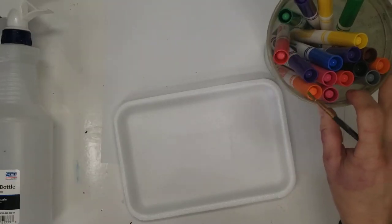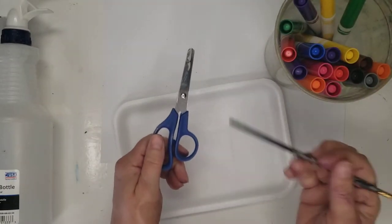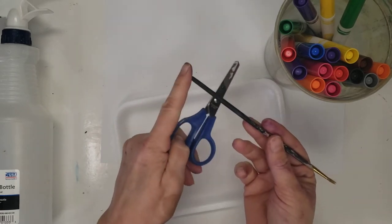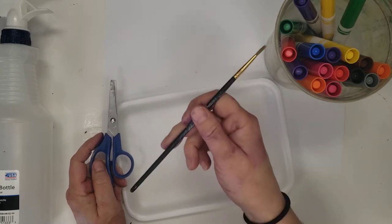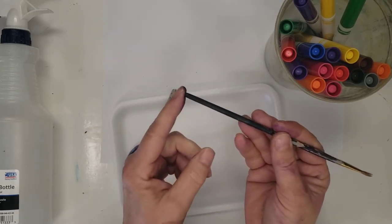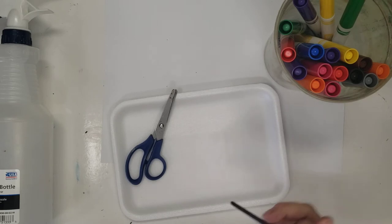You'll need some markers, scissors, and something pointy to make your lines. We're gonna carve into the styrofoam. I'm using a paintbrush, this side of the paintbrush. You could also use a pencil or a pen, that will work too.